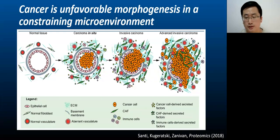Cancer can be conceptualized as an unfavorable morphogenesis occurring within a constraining microenvironment. This environment is a complex structure composed of different components, including the cancer cells, cancer-associated fibroblasts or CAFs, immune cells, blood vessels, and a structure known as the extracellular matrix or ECM. Each of these elements plays a crucial role in how cancer progresses.